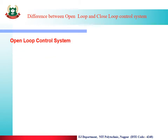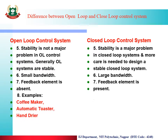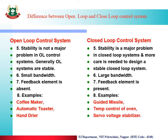Again, a few more comparison points: stability is not a major problem in open loop control system — open loop systems are more stable than closed loop because open loop does not use feedback — but stability is a problem in closed loop control systems. Open loop systems operate in a smaller bandwidth but closed loop control systems require larger bandwidth. Feedback element is absent in open loop — as the name suggests, no feedback is used — but feedback element is present in closed loop control system.